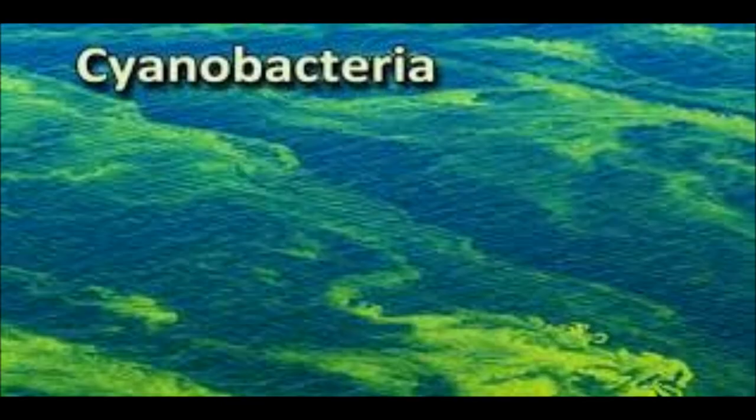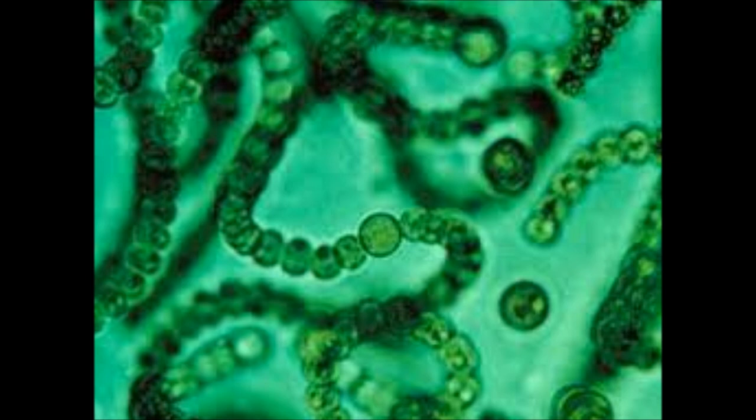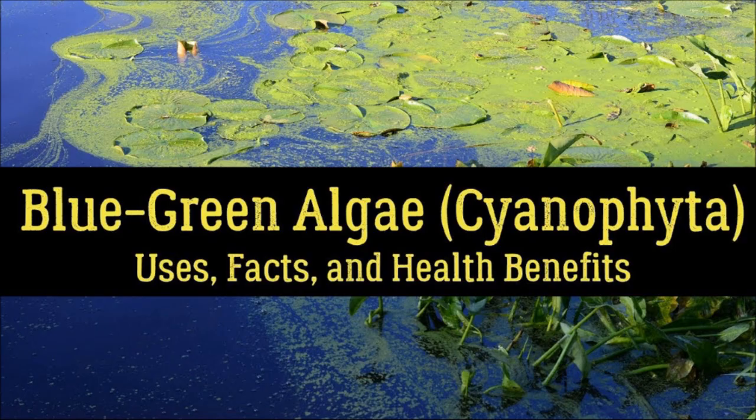Blue-green algae are also known as cyanobacteria. They contain pigments like chlorophyll A, phycocyanin and phycoerythrin. They are unicellular, prokaryotic and covered by a gelatinous sheath. They fix atmospheric nitrogen by converting it into a usable form. Blue-green algae play an important role in recycling nutrients like nitrogen, phosphorus, iron and sulfur. They are also used as a bio-fertilizer.